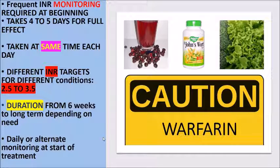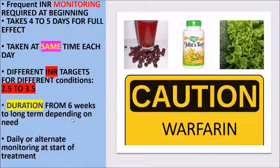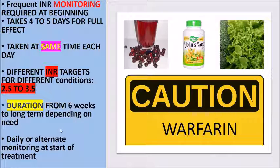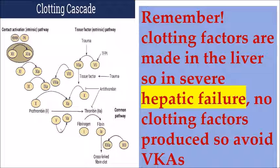Different indications require different INR targets. For recurrent pulmonary embolism or DVT, the INR may go up to 3.5. The target INR and duration of therapy differ by condition — for a single DVT episode, only 6 weeks may be needed, while recurrent cases require longer treatment. Monitoring can be daily or on alternate days when first started. Remember, clotting factors are synthesized in the liver, so in liver failure, no clotting factors are produced, increasing bleeding risk and requiring avoidance of vitamin K antagonists.